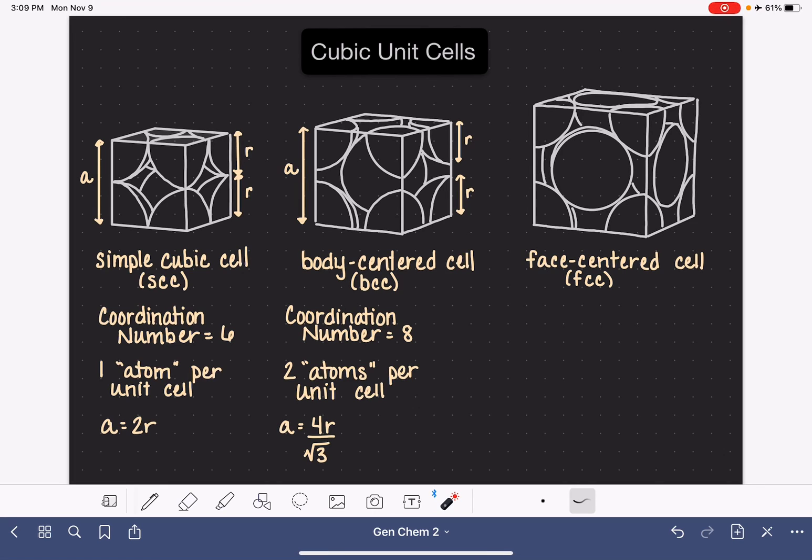In this video, we're going to be looking at the face-centered cubic unit cell, or FCC. We'll be looking at the coordination number, the number of atoms per unit cell, and the relationship between edge length A and the radius R.